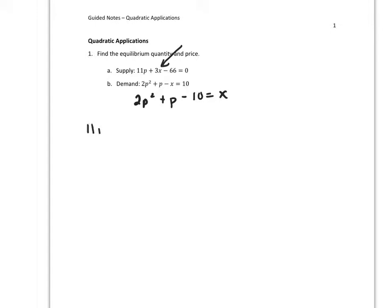So that would be 11P plus 3 times X, which is 2P squared plus P minus 10, minus 66 equals 0. So that's 11P. I'm going to distribute the 3: plus 6P squared plus 3P minus 30 minus 66 equals 0. Let's combine like terms.